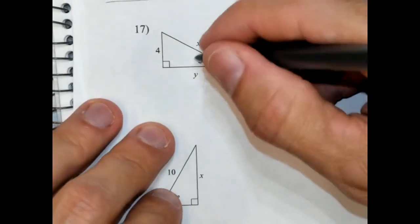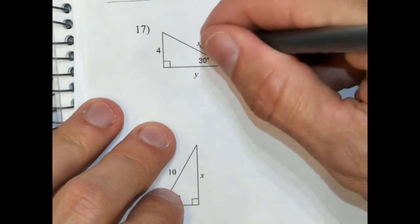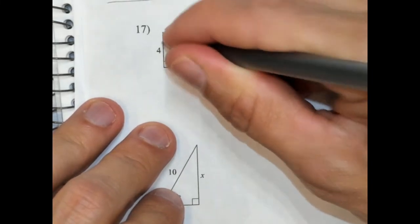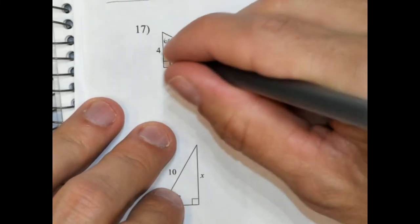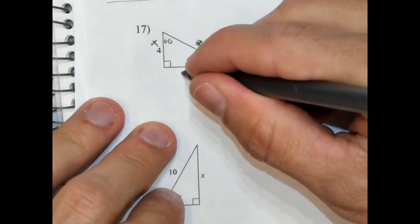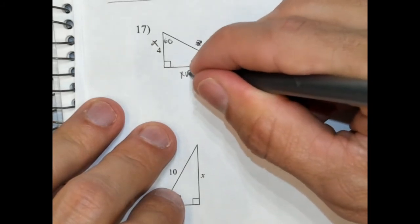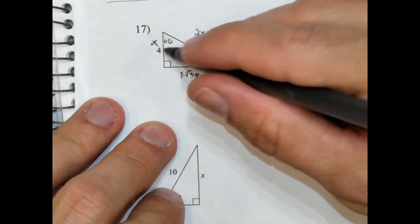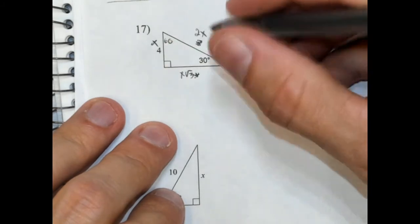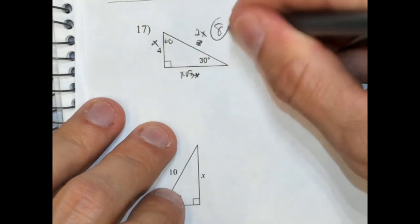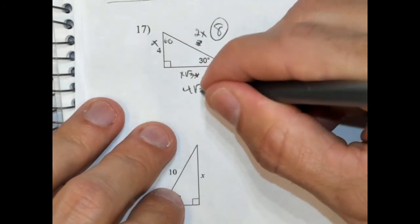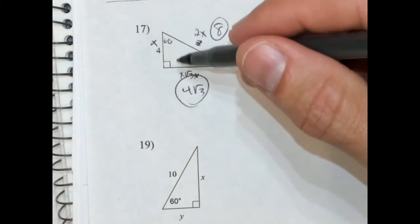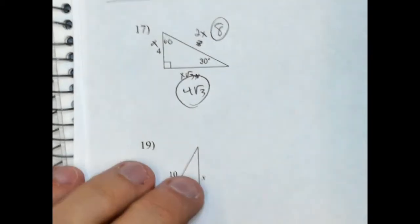And number 17. Let's cross these variables out. So 60. This is going to be x because it's opposite 30. This is x radical 3. And this is 2x. So this is 4, that means this is 8, and this is 4 radical 3. It's really not that bad if they give you the short side, because then you can just modify it. Whereas if you have to solve for the short side, it's more involved.